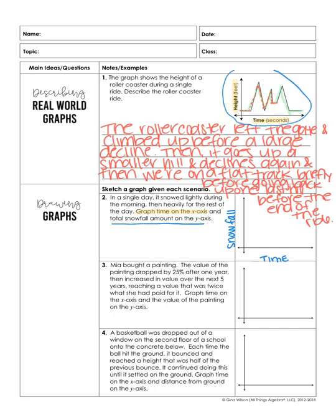We're just sketching a graph to model the situation. It says in a single day, it snowed lightly during the morning. So as time went on, it snowed — it just didn't snow at a quick rate. So it was very slow. Think of that as like a gradual incline. As the day went on, the total of snow kept accumulating, so that's why this line is going to continue to go up.